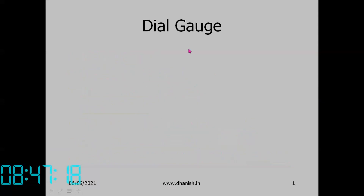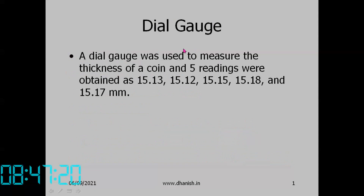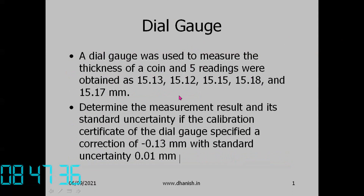We have a simple experiment with a dial gauge. A dial gauge was used to measure the thickness of a coin and 5 readings were obtained: 15.13, 15.12, 15.5, 15.18, and 15.17. In the calibration certificate of the dial gauge, a correction of minus 0.13 mm is specified with a standard uncertainty of 0.01 mm.